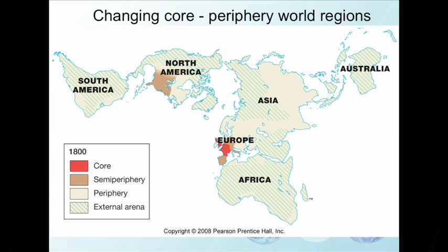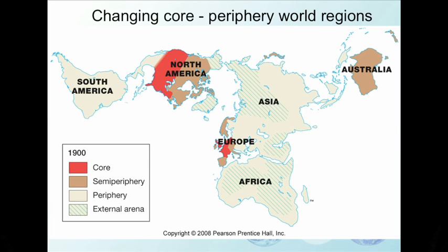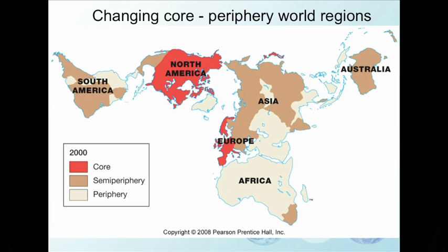This series of maps shows the historic changes in the core-periphery distribution of world regions, so we can think about how development changes over time. One key term to understand this is hegemony, which refers to the domination of the world economy by one nation-state. This is exercised through economic, military, financial, and cultural power.